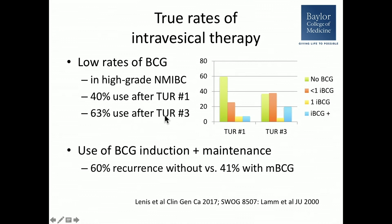Looking at cumulative BCG use after multiple resections, when a patient had at least three resections, overall BCG use rose to 63%, getting closer to ideal — with more patients also receiving induction plus maintenance. There is strong data showing maintenance improves response: BCG induction alone yields a 60% recurrence rate versus a 41% recurrence rate when at least one course of BCG maintenance is added.